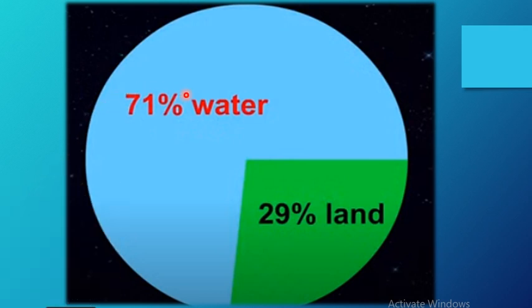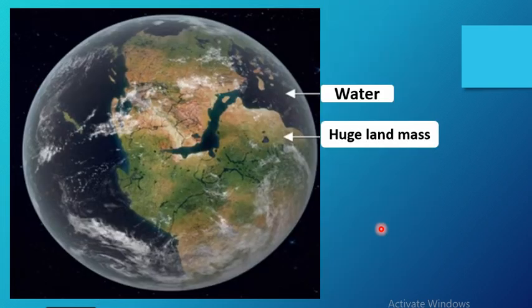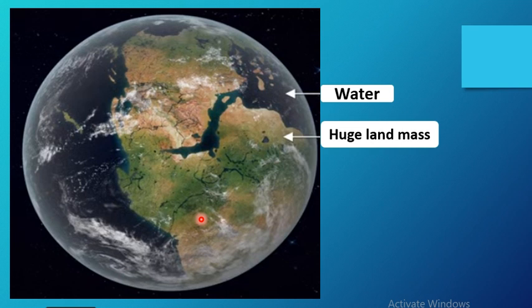The earth's surface is covered around 27% water and 29% land. Millions and millions of years back, earth looked like this — there was just one huge land mass with water all around it, like a very huge island. As time passed, the land mass broke into pieces due to natural processes. These broken pieces are called continents.